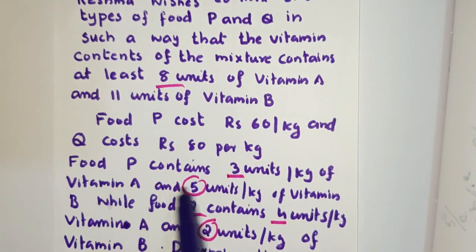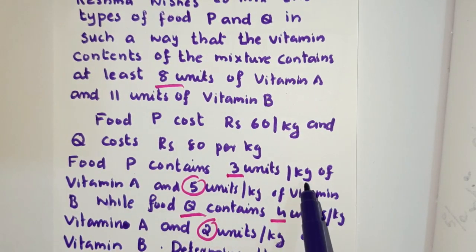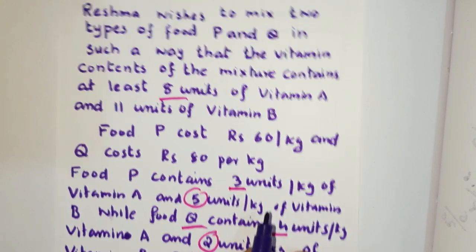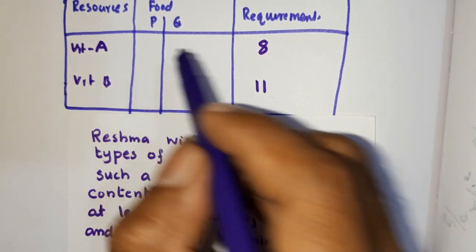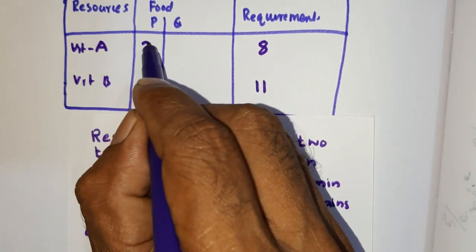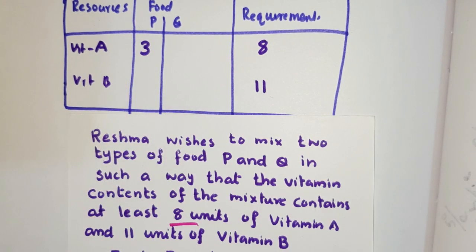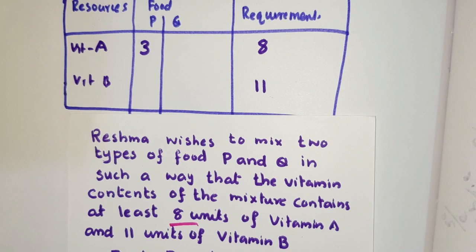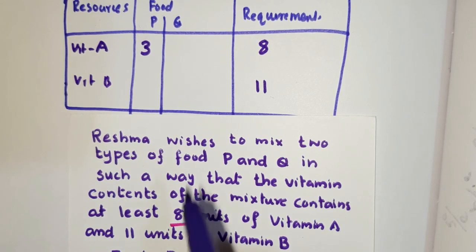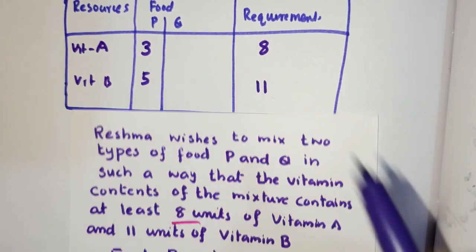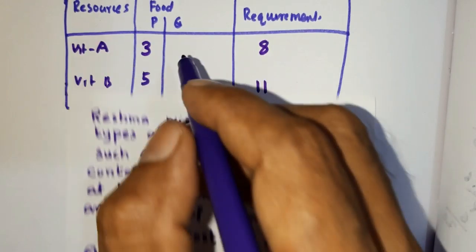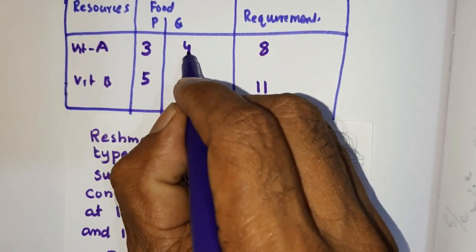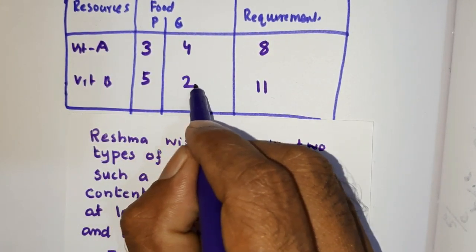Food P contains 3 units of Vitamin A and 5 units of Vitamin B per kilogram. Food Q contains 4 units of Vitamin A and 2 units of Vitamin B per kilogram.